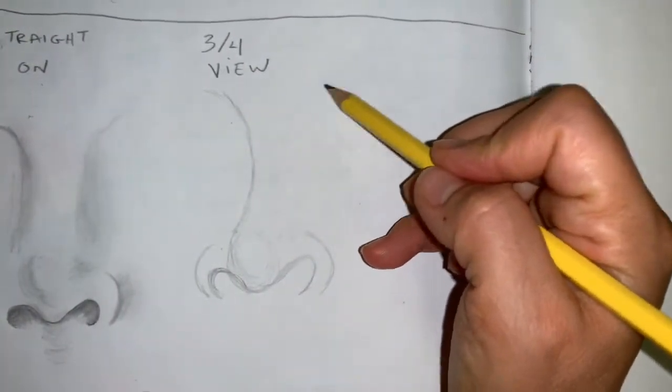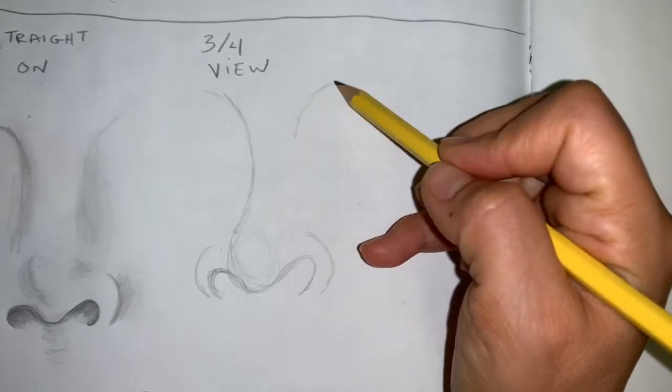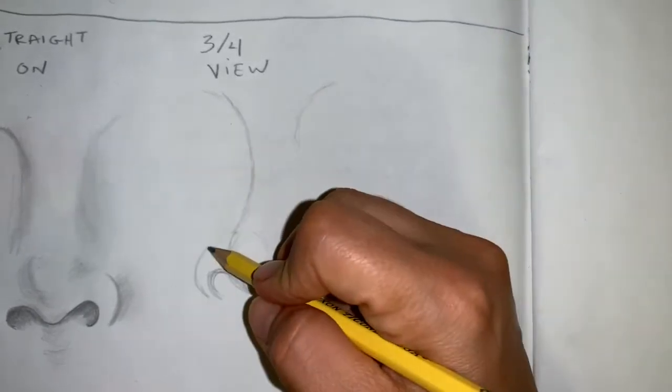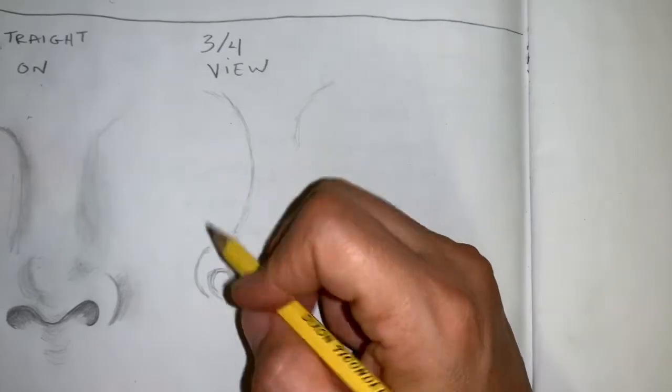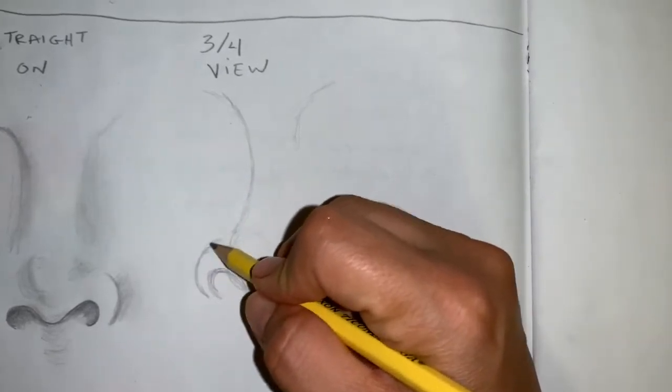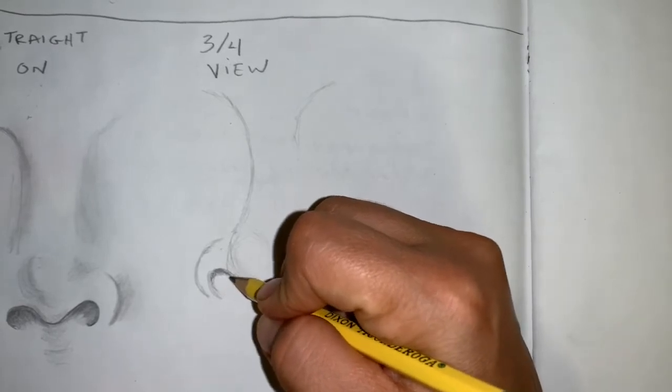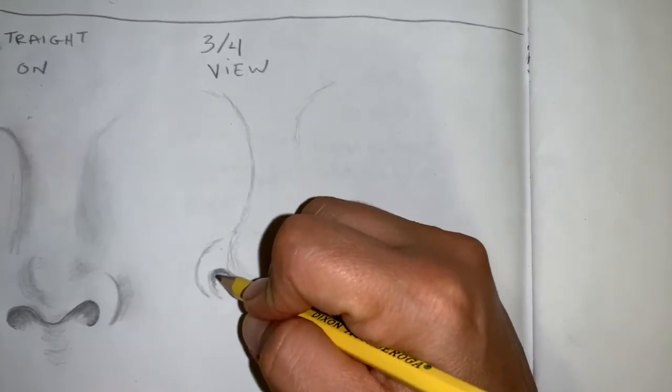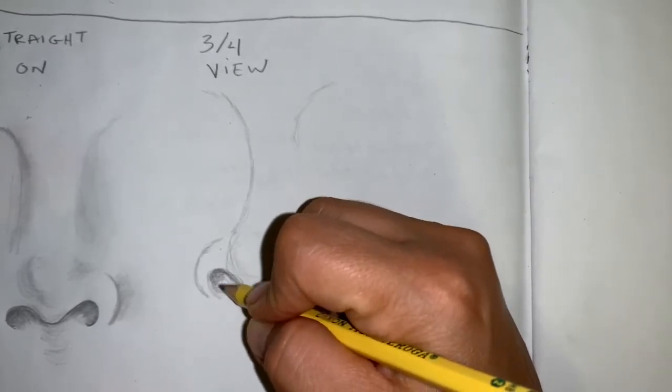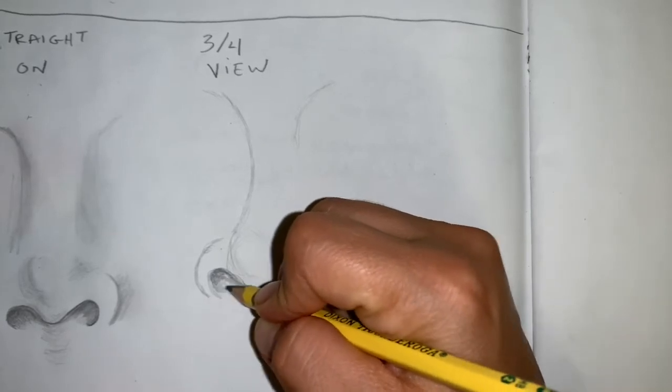A little bit of the shadow of the eyebrow up here, just so we get a gauge as to where we are in space. I'm going to start shading this area in a bit darker, closer in, lighten up a little bit. This will be the nostril.